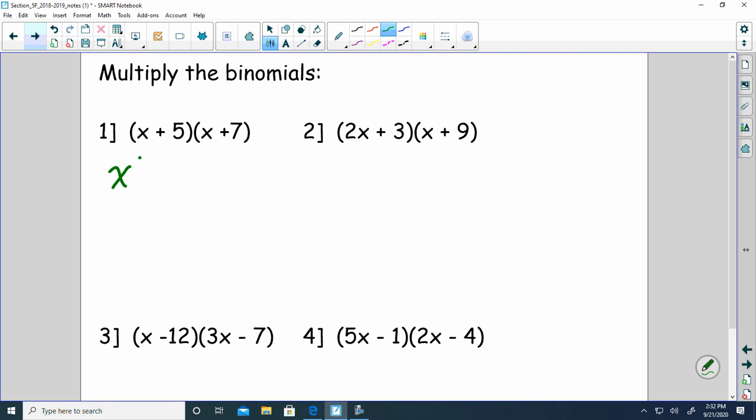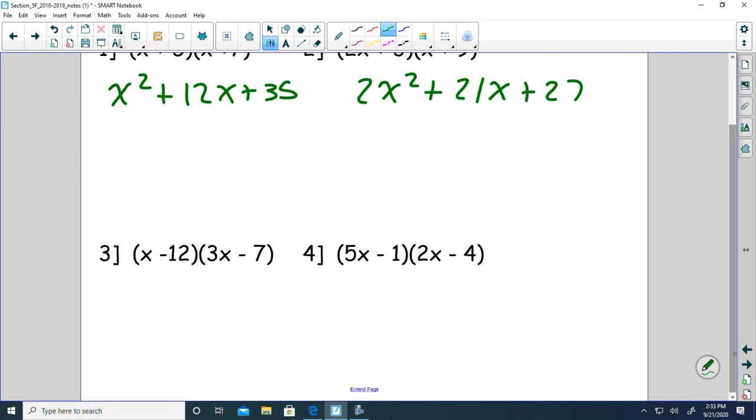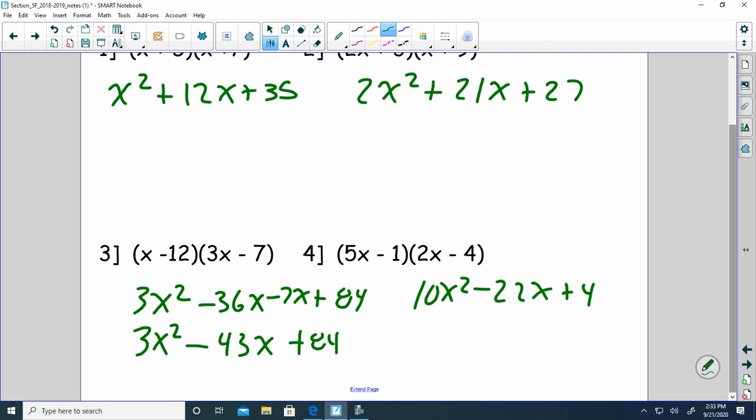So we do these kind of quickly. Notice I combined 5x and 7x together quickly. I got 2x squared, 3x, 18x. That's 21x plus 27. This next problem. We have 3x squared minus 12x minus 36x minus 7. I'm going to have to write it down because I'm doing too much in my head. Plus 84. So then you have 3x squared minus 43x plus 84. Last problem. Just FOIL it. So you get 10x squared minus 2x minus 20x minus 22x plus 4. So again, just simple algebra 1. But I'm just trying to get us a little bit faster on it.